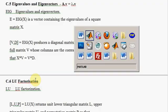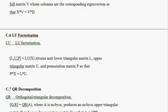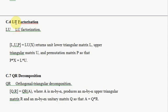Now looking at LU factorization. Here's matrix A, and we often want to find the LU factorization in linear algebra. L and U are matrices such that L is a lower triangular matrix and U is an upper triangular matrix, and the product of these two is the original matrix. In MATLAB, the `lu` command returns three arguments: L, U, and the permutation matrix P. Sometimes we need to do row swapping to avoid zeros on the diagonal, so we need that permutation matrix P.